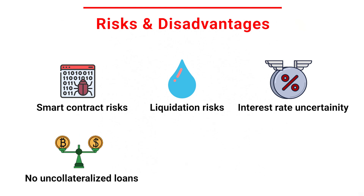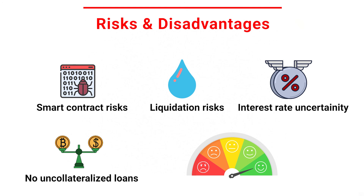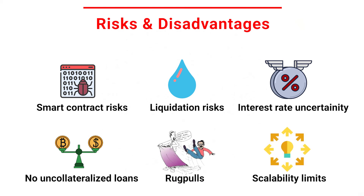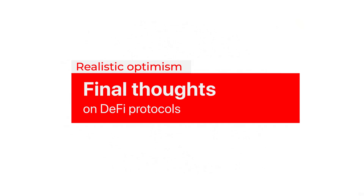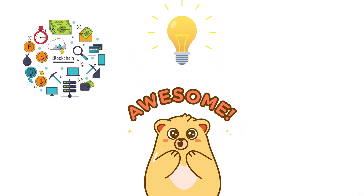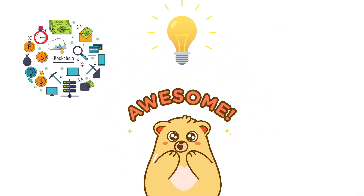No under-collateralized loans: DeFi lending protocols currently do not offer under-collateralized loans, whereas in certain CeFi offerings, users with good credit ratings could borrow without any collateral. There are also other inherent issues of DeFi, such as rug pulls and scalability limitations of the blockchain on which the protocol is deployed. Most of these risks are well mitigated in protocols such as Aave and Compound, and users should do their own research when trying out new protocols. The whole DeFi space is evolving at a rapid pace, and it's very exciting to see how DeFi protocols employ novel techniques to utilize the unique properties of blockchains and work around the limits of decentralized systems.